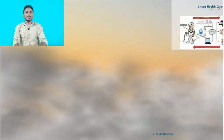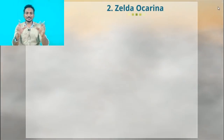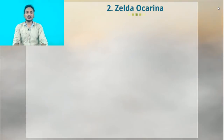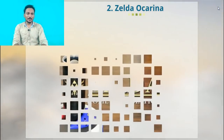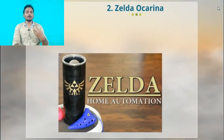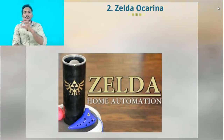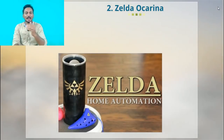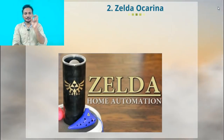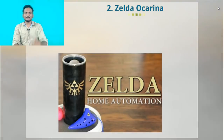Your second project idea on IoT is — I am so happy to see this concept. It's just a musical instrument. For example, I am going to have some home automation. With the help of the instrument, I can play a tone. As per the tone, the process will be automated. For example, you can have a clip.